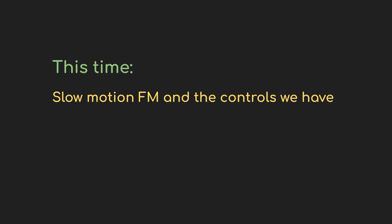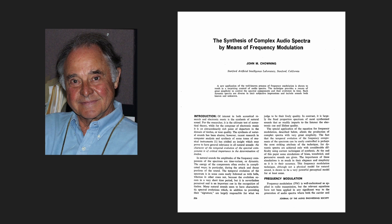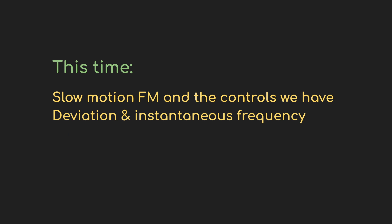Today we start that journey, and I'm going to kick things off by looking at slow frequency modulation and the controls we have over it. Along the way I'm going to introduce some of the ideas and terminology that appear in the original 1973 paper on FM by John Chowning. By the end of this video I'm hoping that you'll have a better intuition of what's happening when you start to explore FM, and as a bonus you're going to learn how FM radio works.